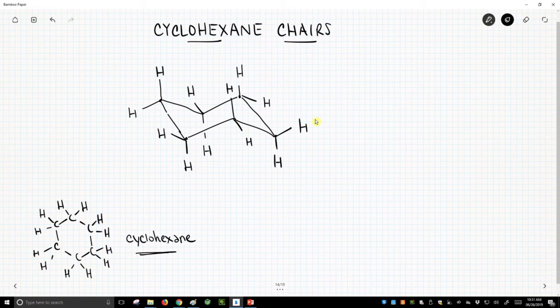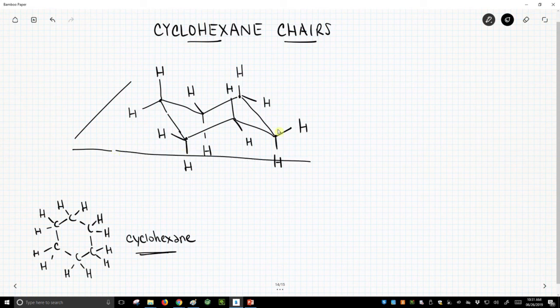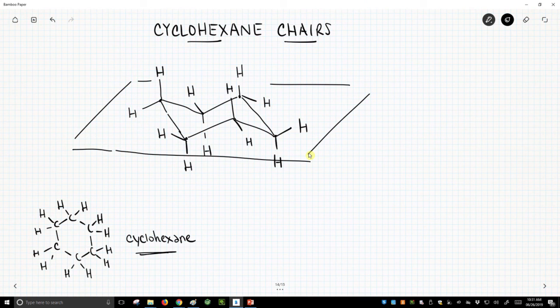So this is our cyclohexane. Note that this chair sits roughly in a plane. This is not a planar structure, but the carbons kind of all fall within a plane.